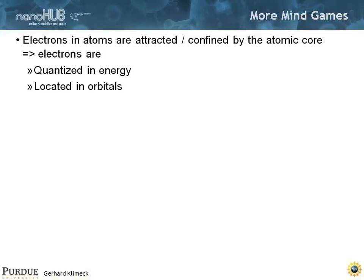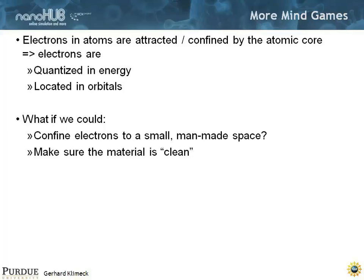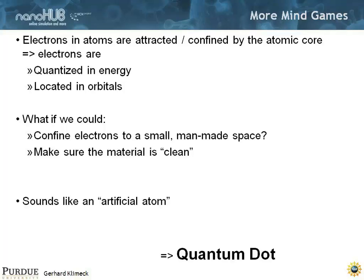If electrons in atoms are attracted and confined to an atomic core, we know they have quantized energy and localized orbitals — that's how quantum mechanics was discovered. But what if you can confine electrons in a man-made structure that is small, in a small space where the material is sort of clean? That sounds like an artificial atom. If you can confine electrons to a small space where there are long coherence times, you create an artificial atom — and that's a quantum dot.